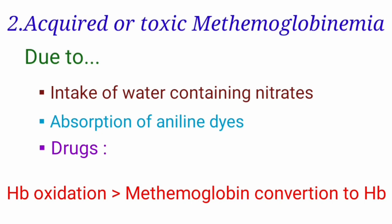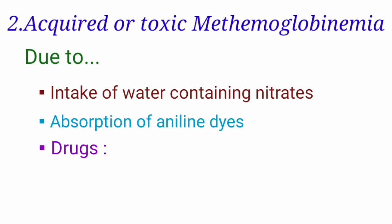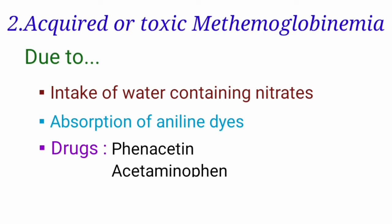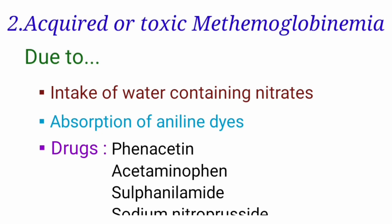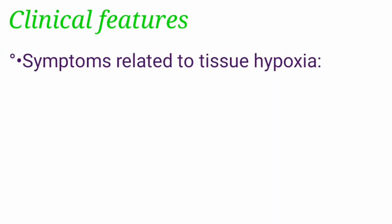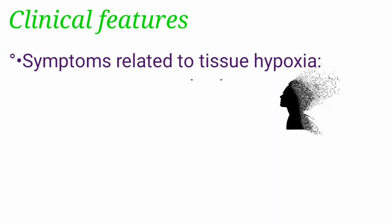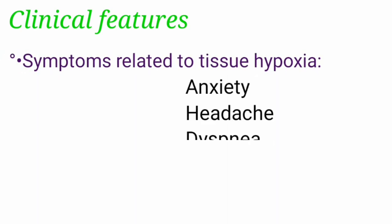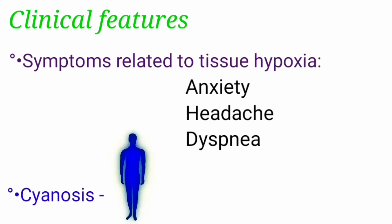Drugs causing methemoglobinemia include phenacetin, acetaminophen, sulfonamide, and sodium nitroprusside. The clinical features are related to tissue hypoxia and include anxiety, headache, dyspnea, and cyanosis.